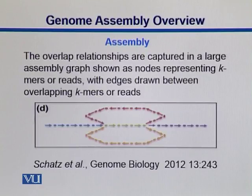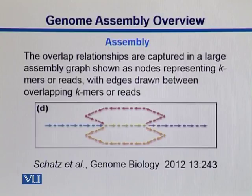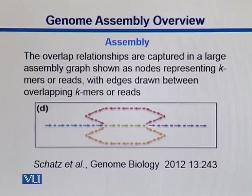The overlap relations are captured in a large assembly graph. What we are seeing in this picture is these overlaps are represented in the shape of a graph. What we do here is we take those reads and we break them into further small fragments called k-mers. For example, if the read is 100 base pairs, we can take a segment of 10 base pairs from it, so our k-mer size is 10. We then overlap those k-mers with one another — we recognize those k-mers as nodes, and the edges between these nodes are actually representing their overlap. In this way we come up with a graph where these nodes and edges are present.